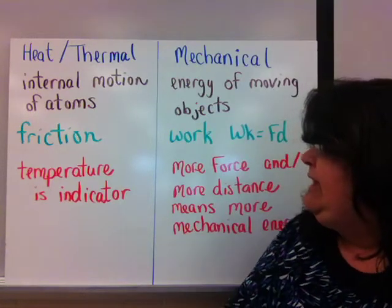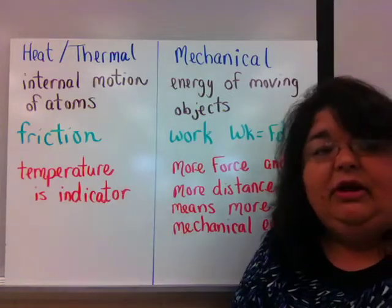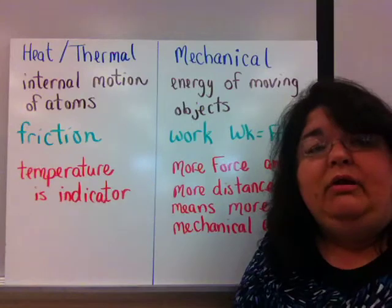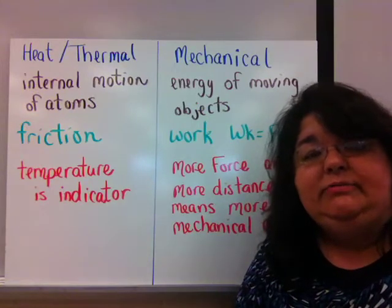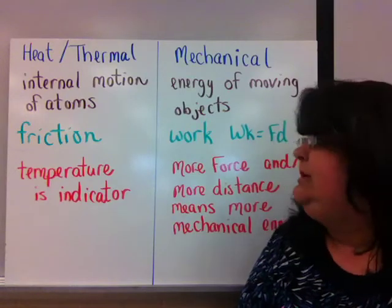We measure heat energy with a thermometer. Temperature is the indicator of heat energy. And we can also get heat energy through friction. When we take two objects and rub them together in opposite directions, we're going to create heat between those objects.